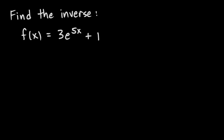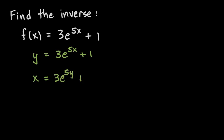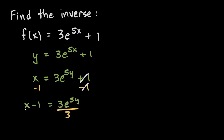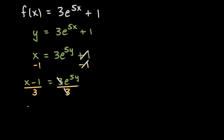Now for another example: find the inverse of f of x equals 3e to the 5x plus 1. We rewrite with y-notation: y equals 3e to the 5x plus 1. Then we switch x and y, giving us x equals 3e to the power of 5y plus 1. To solve for y, we start by subtracting 1 from each side, giving x minus 1 equals 3e to the 5y. Then we divide both sides by 3, and the 3s cancel, leaving x minus 1 over 3 equals e to the 5y.